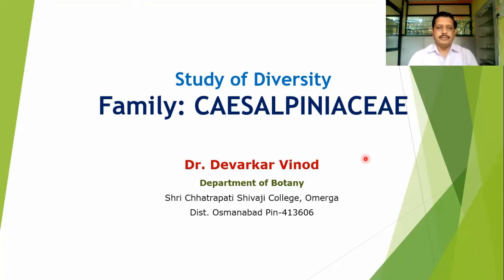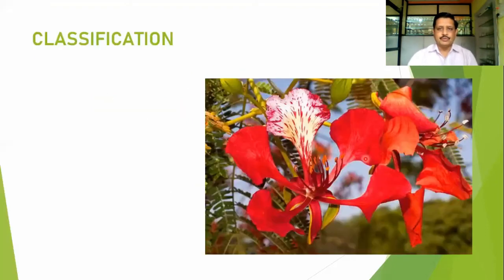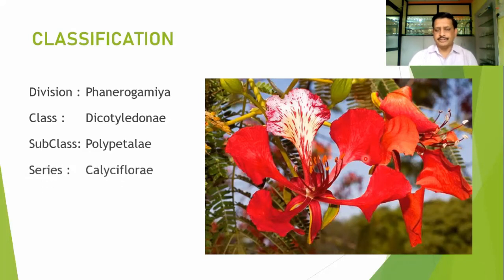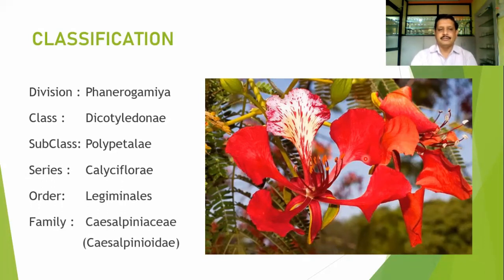Today we are going to learn another family from Leguminosae, that is family Caesalpiniaceae. This is an interesting family belonging to the group Phanerogamia, Dicotyledone, having two cotyledons. Subclass Polypetali, Series Calyciflorae, Order Leguminosae, and Family Caesalpiniaceae. Previously it was also known as Caesalpinioideae.